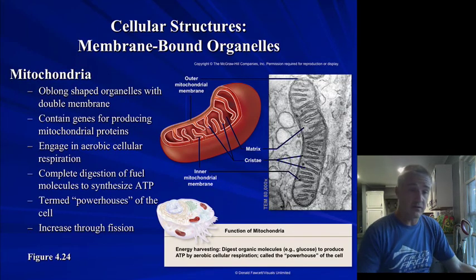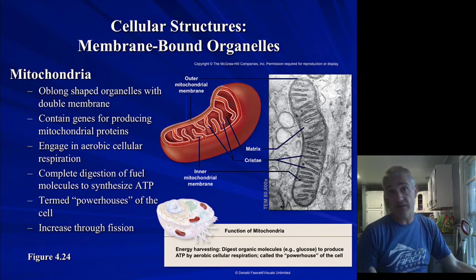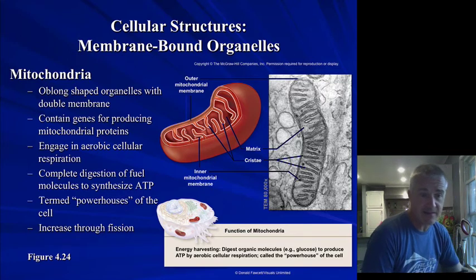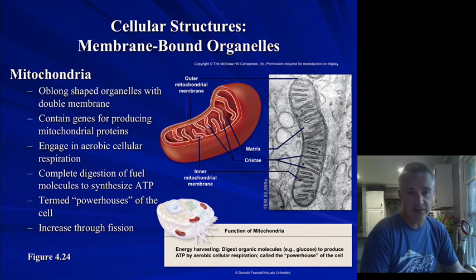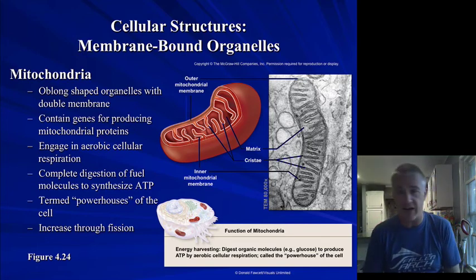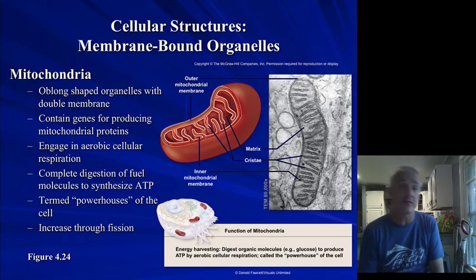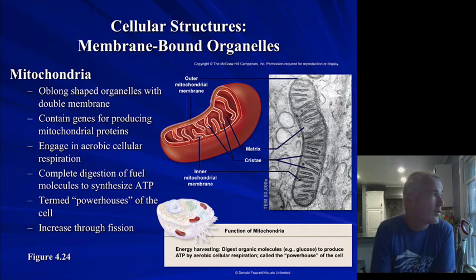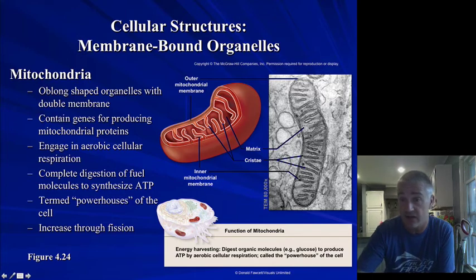The last membranous organelle doesn't participate in the endomembrane system — the mitochondria. It has an inner and outer membrane and is involved in ATP synthesis. You've probably heard that the mitochondria is the power plant of the cell. They divide separately and actually have their own DNA, their own chromosome, and their own ribosomes that are all slightly different from the rest of the cell. It's thought that way back in evolution, a cell engulfed one of these bacteria-like structures and instead of killing it, kept it.